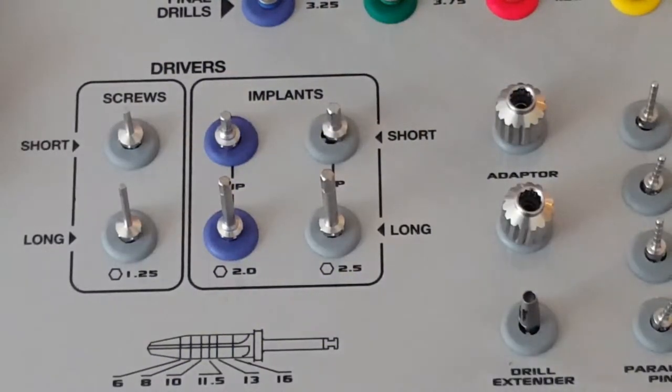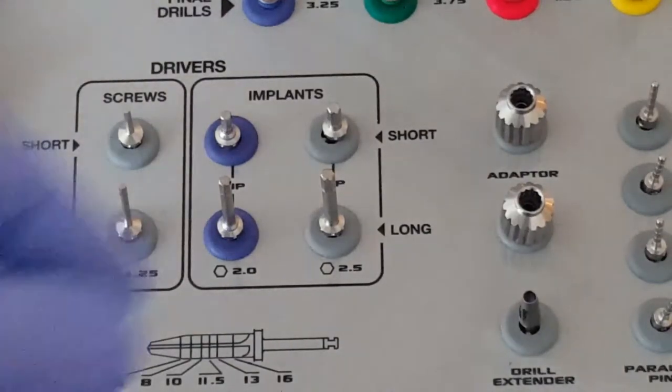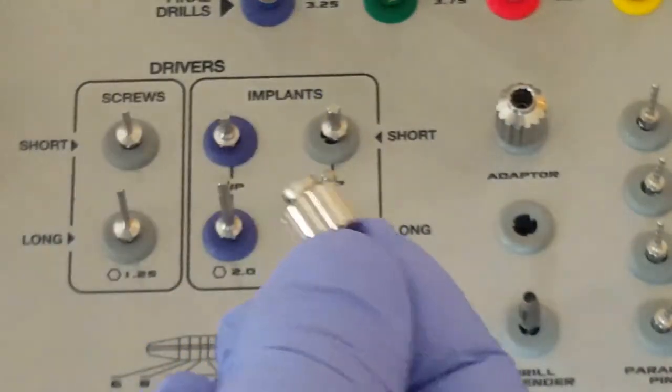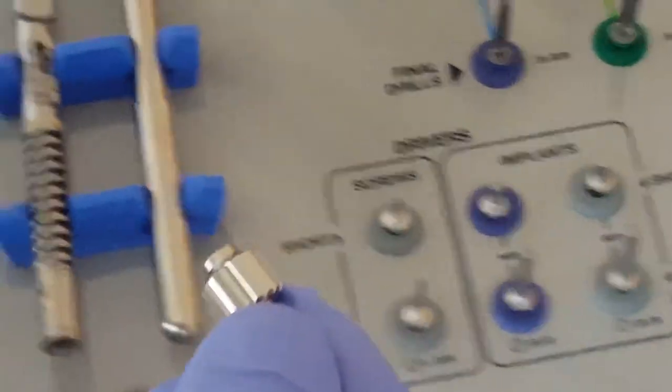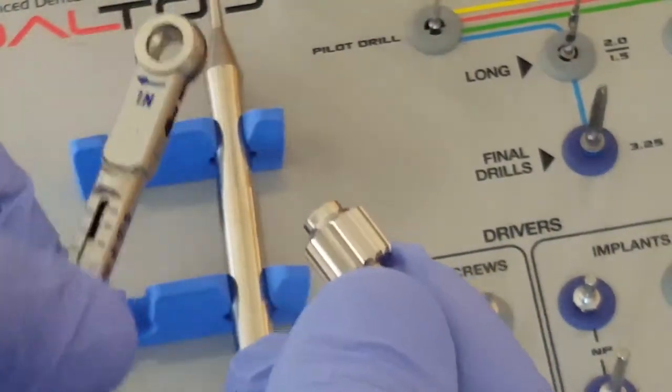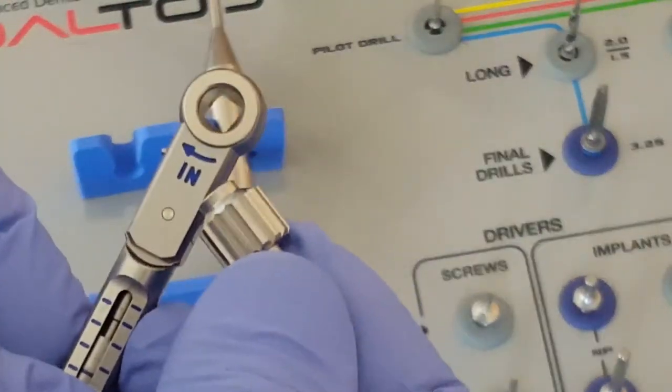If the ratchet is going to be utilized to seat the implant, then the adapter is taken. We take the ratchet. We see one side says in,